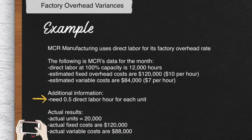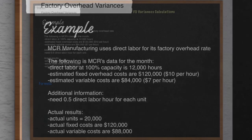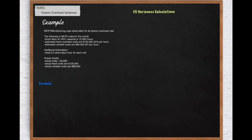Actual results: they produce 20,000 units. Actual fixed costs are $120,000 and actual variable costs are $88,000.